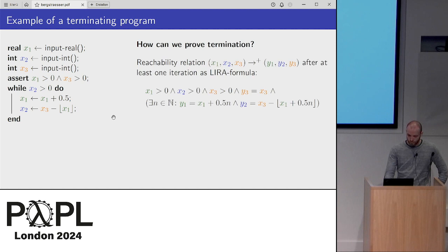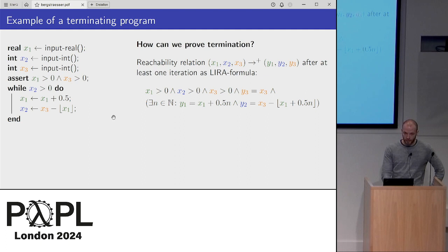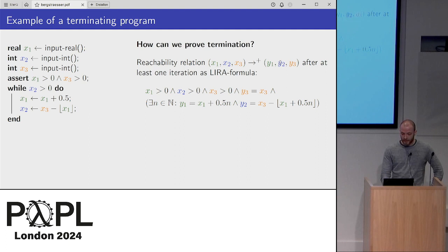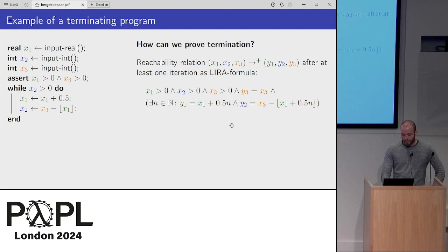One way to do this is to look at the reachability relation. We have at least one iteration, and this can be expressed as a real integer linear arithmetic formula — a formula where you have both reals and integers, with addition, less-than, and the floor operator as in the program. The x's are the values I start with and the y's are the new values I can reach. So this formula looks like this: the x's should all be greater than 0, and we know that the third component x3 doesn't change, so y3 equals x3. Then there exists some iteration n such that y1, the new value of x1, is the old value plus n times one half.